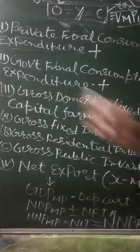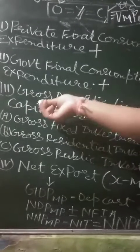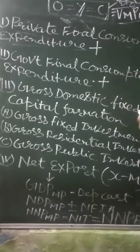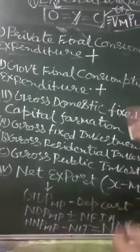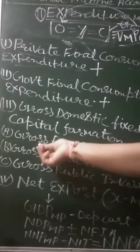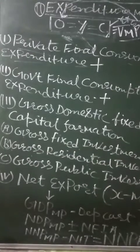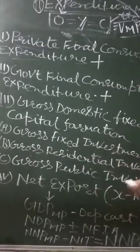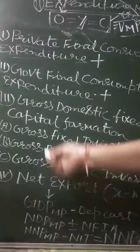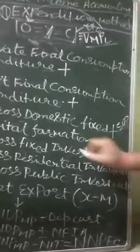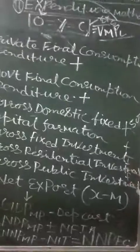The third item is gross domestic fixed capital formation. Its amount also has to be added, but here we need to be a little careful because it has three parts: Part A is gross fixed investment, Part B is gross residential investment, and Part C is gross public investment. If the head 'gross domestic fixed capital formation' is given — say 500 rupees — then we do not add any of the three sub-parts separately.